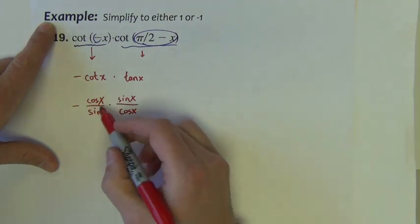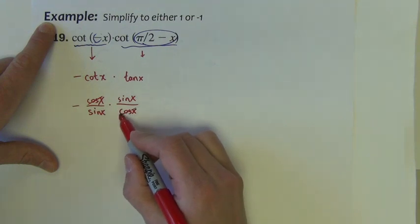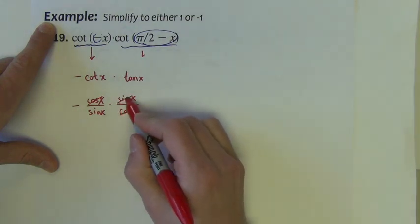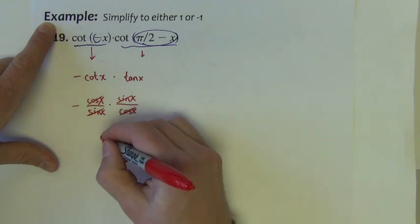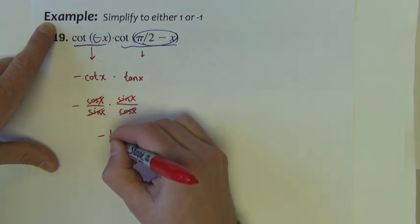A little bit of reducing, cosine divided by cosine is 1, sine divided by sine is 1. So the result is negative 1.